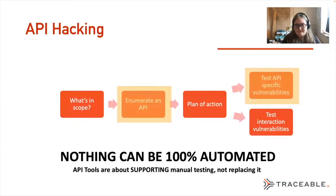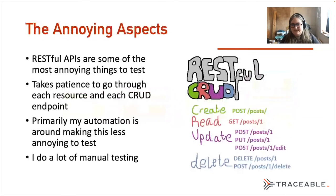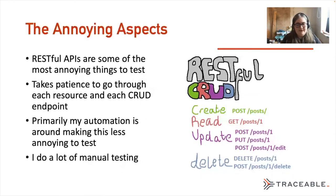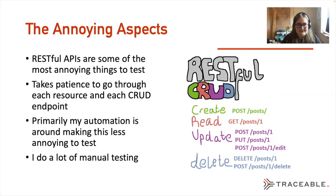Why is it annoying to enumerate things? RESTful APIs — I love them, I developed RESTful APIs, I hacked RESTful APIs — they are so annoying. They are some of the most annoying kinds of websites to test, by a landslide. Because you have this really nice developer-friendly, predictable structure going through your create, read, update, delete — that takes a lot of time to go through.